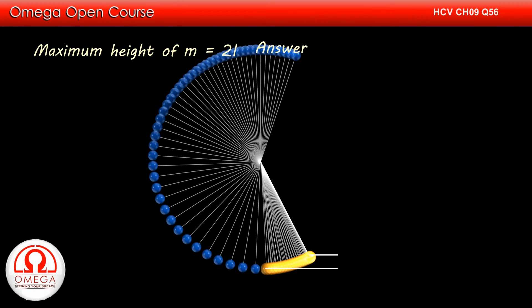For the heavier particle, let us assume that it attains maximum height h above its lowest position. Since the particle is at rest at its maximum height, all its kinetic energy must be converted into its gravitational potential energy. Hence, 2mgh must be equal to half into 2m into v2 squared.